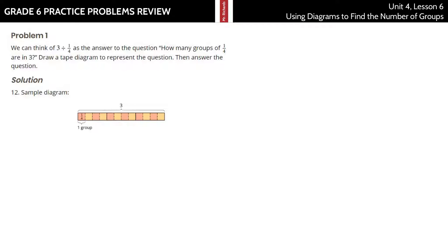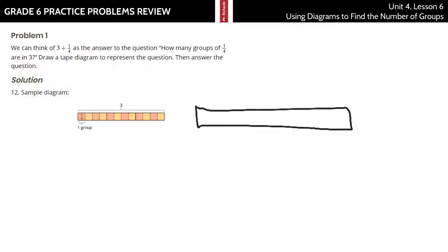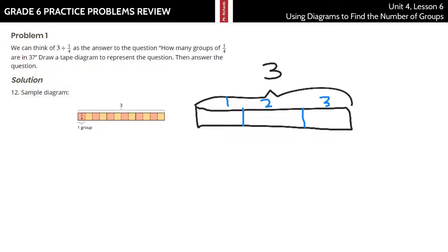Draw a tape diagram to represent the question and then answer the question. If we draw a diagram here, and this whole thing represents 3, I can take this entire thing and split it into basically 1, 2, and 3. That's our 3.